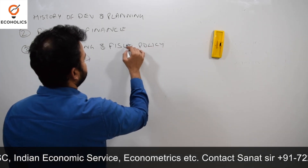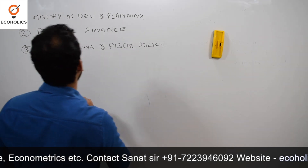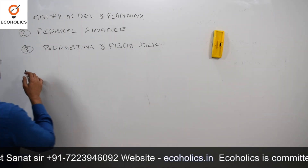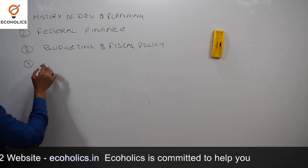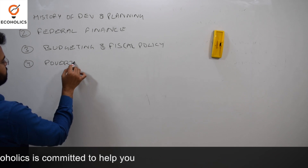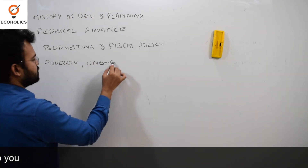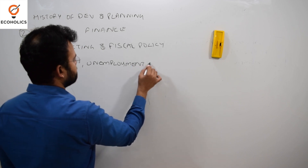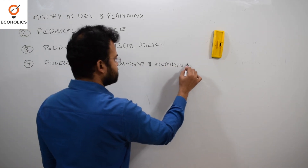Budgeting is related to yearly budgets of the Government of India, and fiscal policy relates to taxes and expenditure. The fourth topic is poverty, unemployment, and human development.